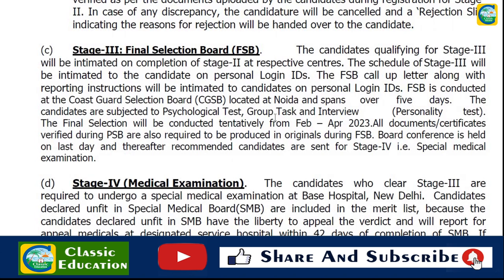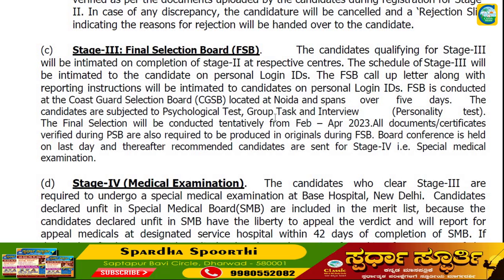The final selection call-off letter along with reporting instructions will be communicated to candidates via their personal login IDs. The Personal Selection Board is conducted at the Coast Guard Selection Board located at Noida, spanning over 5 days. Candidates are subjected to psychological tests, group tasks, and an interview. The final selection is scheduled tentatively from February to April 2023.